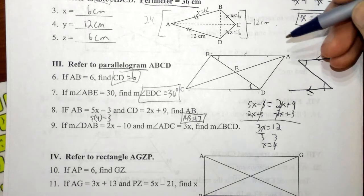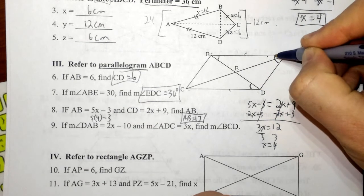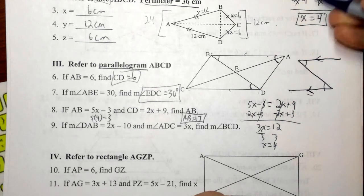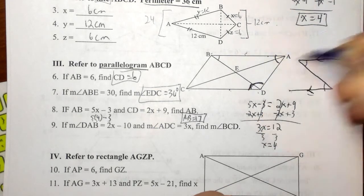Number nine. Angle DAB, which is the greater acute angle here, is 2x minus 10, and angle ADC, which is again this greater obtuse angle down here,